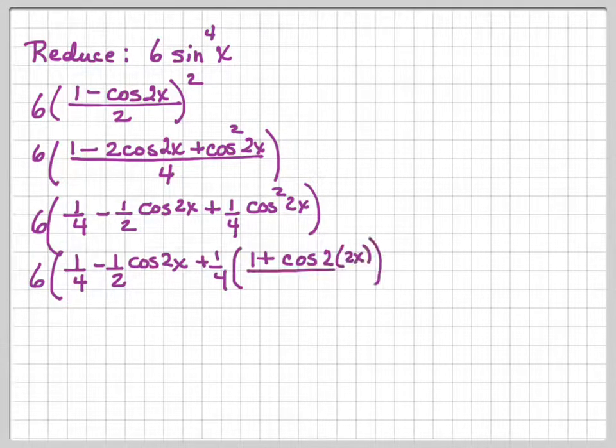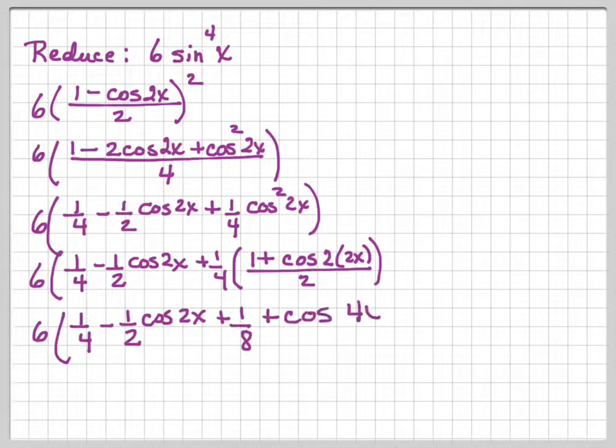I'm going to copy down what I had, and I'm going to change my cosine squared 2x to 1 plus cosine 2 times 2x over 2. And now I have 1 fourth minus 1 half cosine 2x plus 1 eighth.